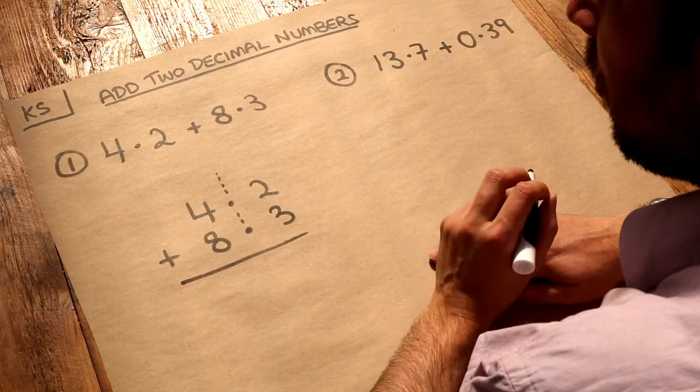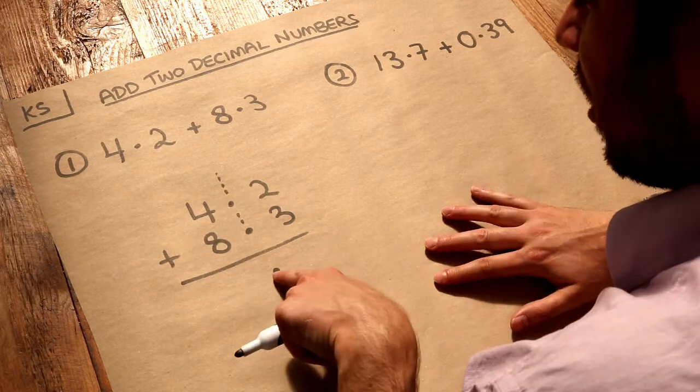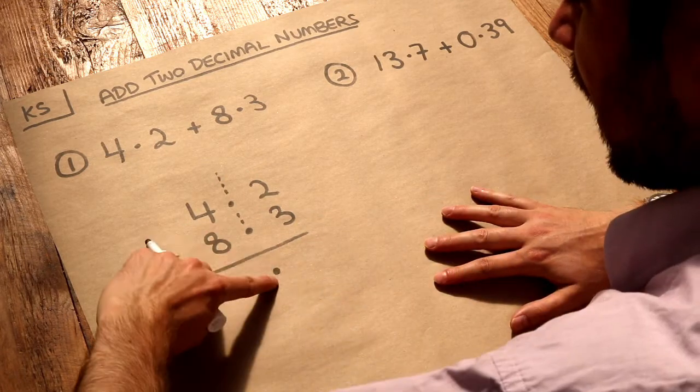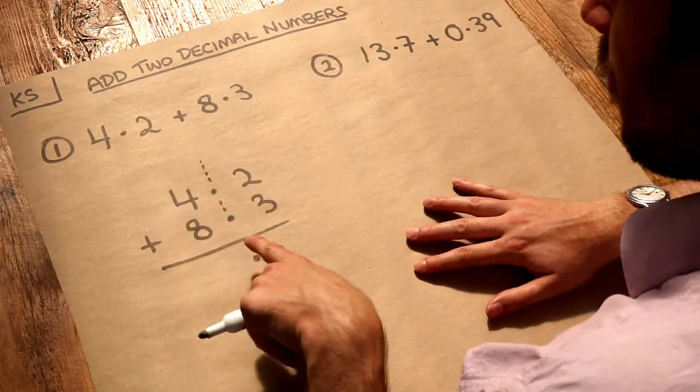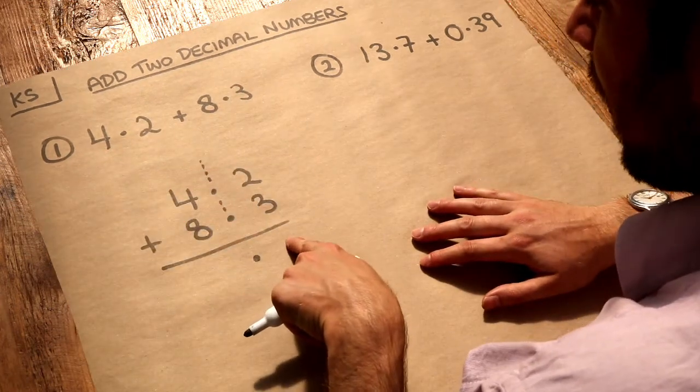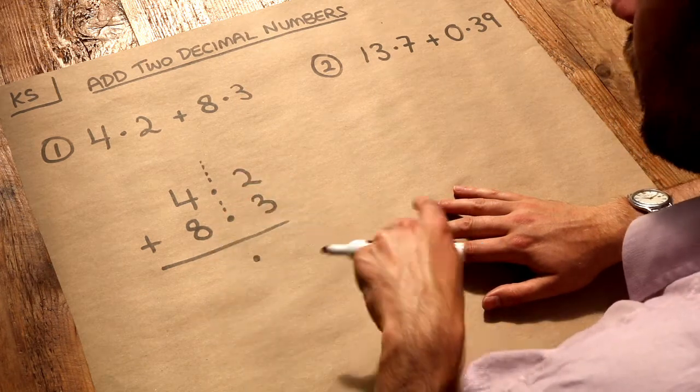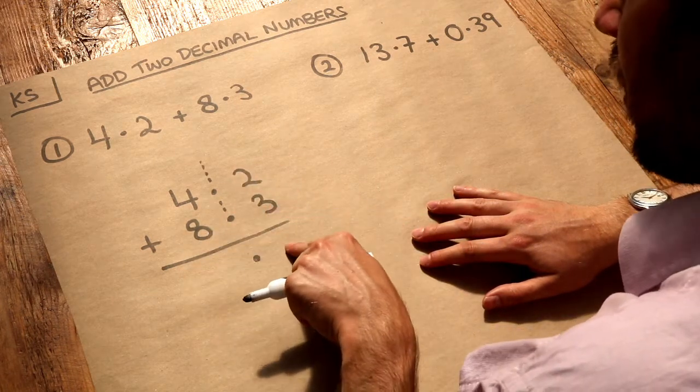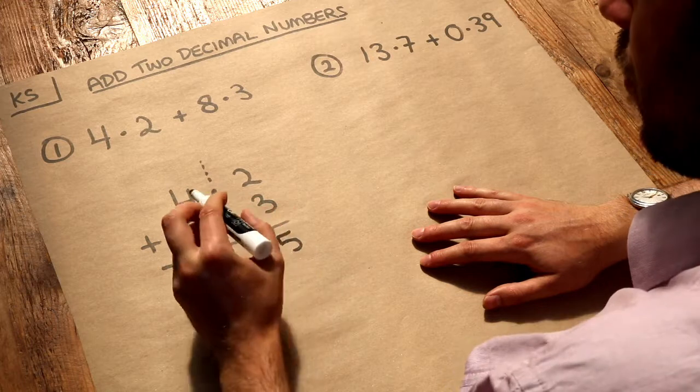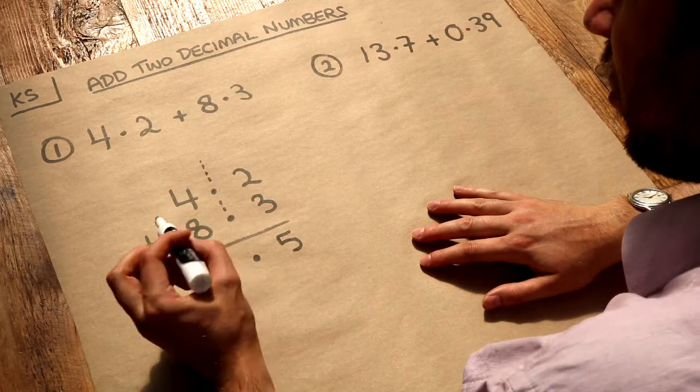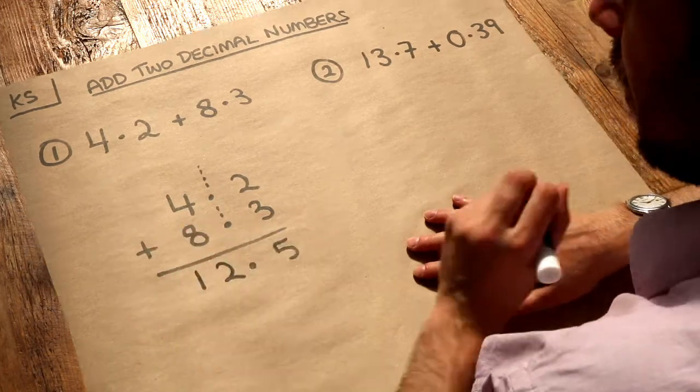Then we just add them like we would add whole numbers. We just need to make sure we put the decimal point here, vertically aligned, and that ensures whatever digit we get will be the tenths digit. So we do 2 plus 3 is 5, and we do 4 plus 8 which is 12. That is the final answer.